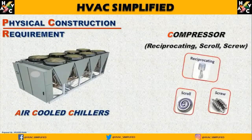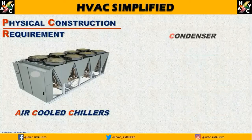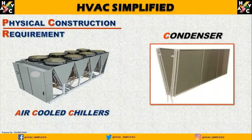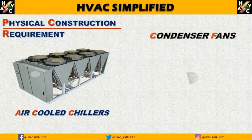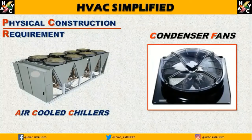Compressor — जिसे reciprocating, scroll और screw कह सकते हैं — air-cooled chiller में ये तीन type के compressors का इस्तेमाल किया जाता है। Next होता है condenser, जिसे हम air-cooled condenser कहते हैं, क्योंकि ये condenser air-cooled type होते हैं, इसलिए हमारे chiller को air-cooled chiller कहा जाता है — because of the condenser। Next component हमारा होता है condenser fan, जो depending on the load requirement और capacity के हिसाब से इसको configure और size किया जाता है।